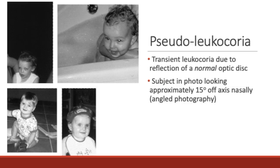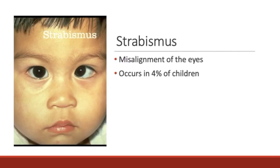Lastly, pseudoleukocoria. Pseudoleukocoria refers to a transient leukocoria caused by the reflection of a normal optic disc. This can occur in angled photography where the subject looks approximately 15 degrees off-axis nasally to bring the normal optic disc into view. Pseudoleukocoria can also be seen in patients with strabismus, more commonly known as cross-eye, which is a misalignment of the eyes occurring in about 4% of children. Due to the misalignment, the optic disc shadow can fill the pupil at a certain angle, producing a white reflex.